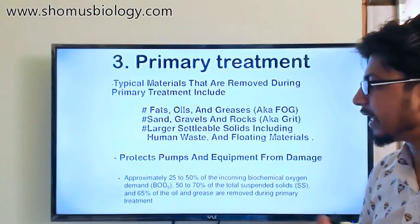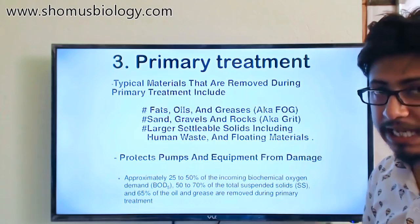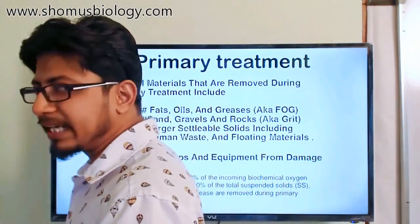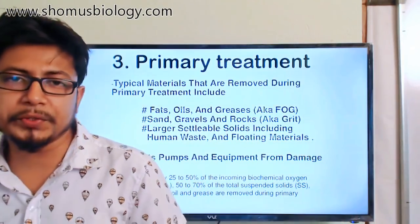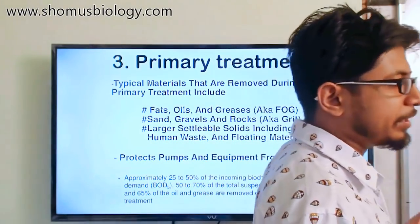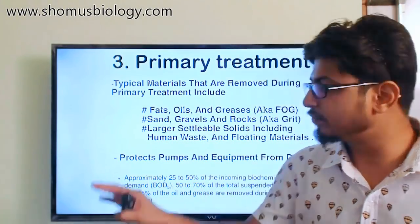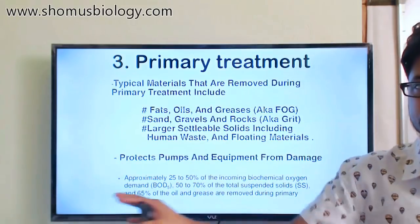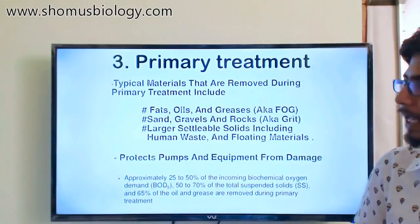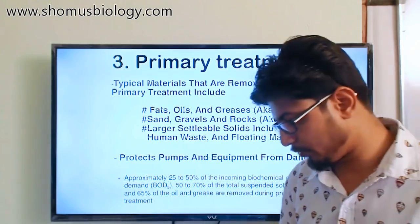This primary treatment protects pumps and equipment from damage, because when the water moves to the next secondary and tertiary treatment stages, the machines may get damaged if solid materials are still present in the wastewater. So it's very important to reduce and remove them, which is exactly what primary wastewater treatment does.